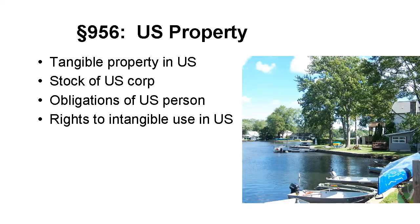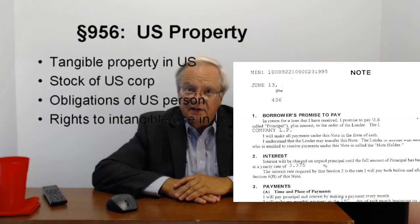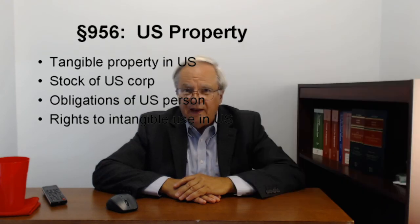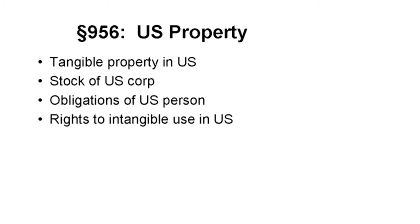The key to Section 956 is U.S. property. This includes tangible property located in the U.S., stock of a U.S. corporation, obligations of U.S. persons, and rights to use an intangible in the U.S. That's a pretty broad definition. In 2015, the IRS proposed regulations that would treat stock or obligations of U.S. persons held through partnerships as U.S. property.